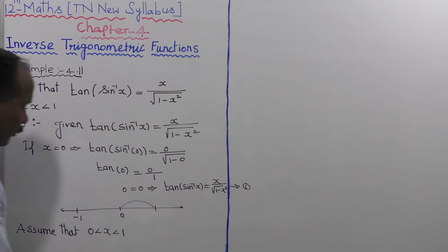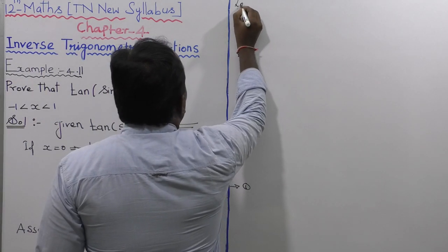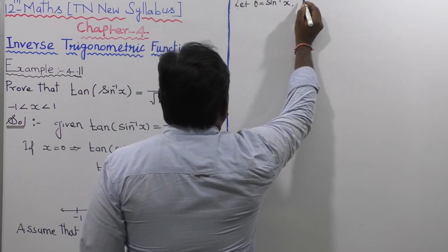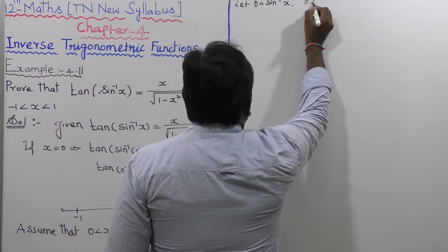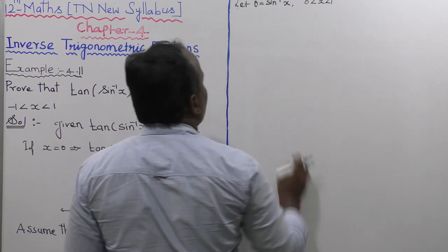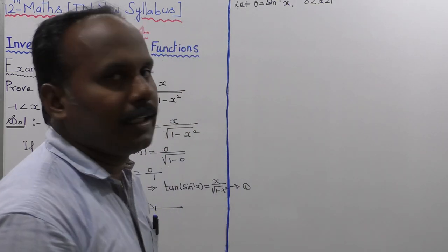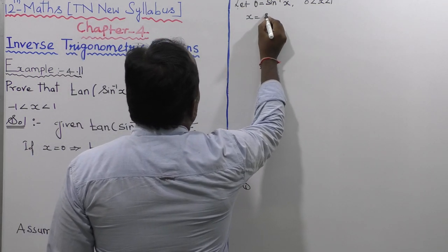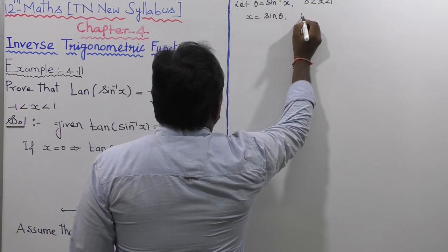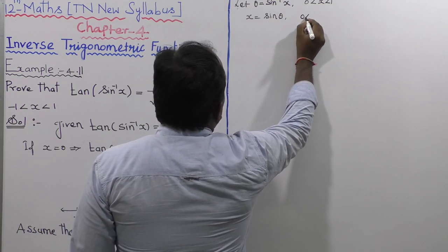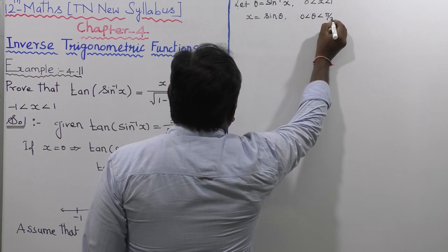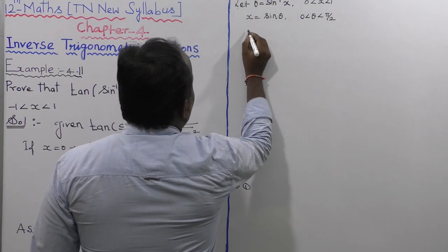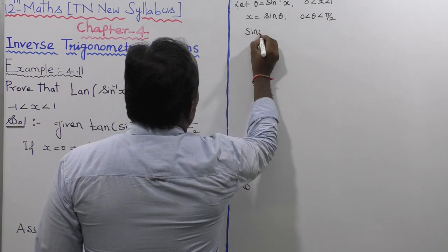Assuming the interval 0 less than x less than 1. Suppose theta is equal to sin inverse of x, which implies x is equal to sin theta. With x in the interval 0 less than x less than 1, theta takes values in the interval 0 less than theta less than pi by 2.